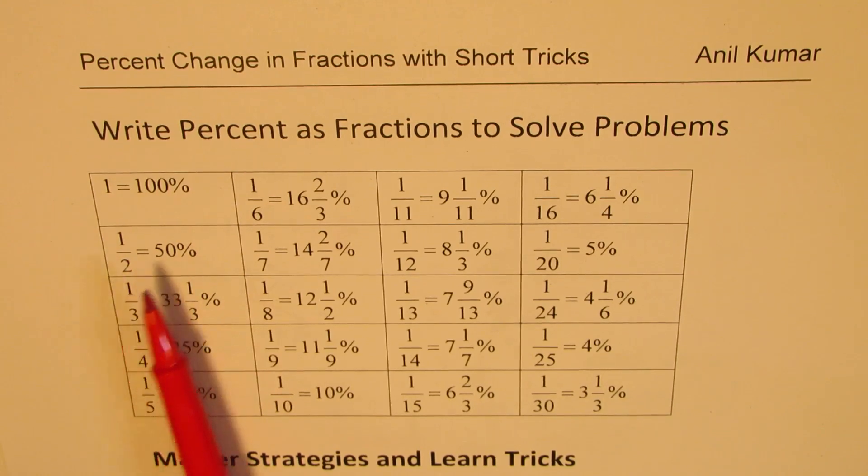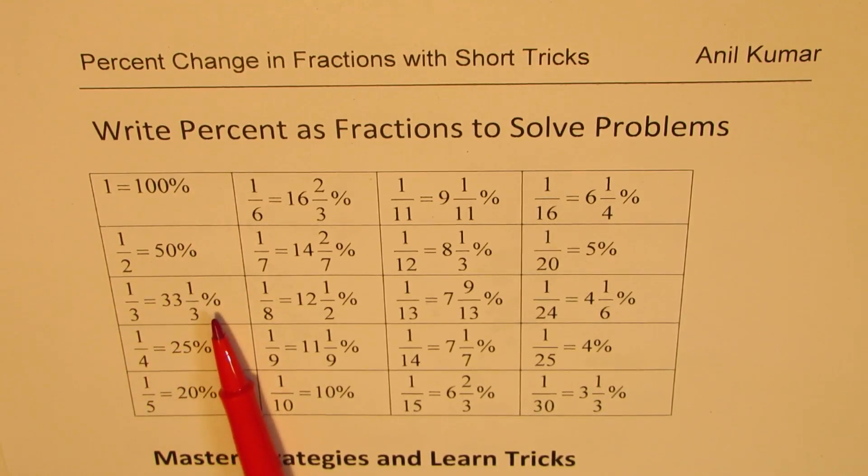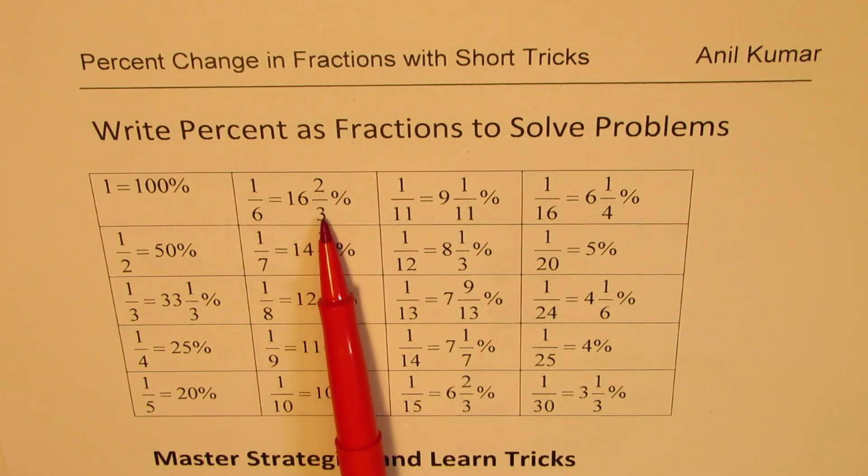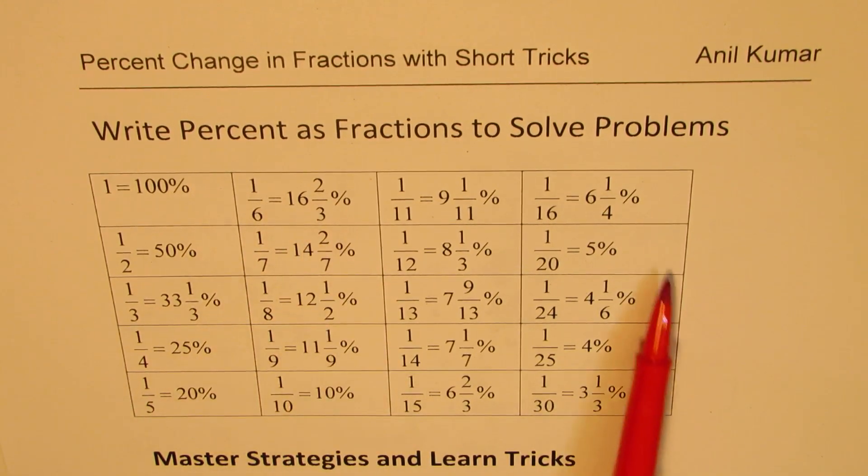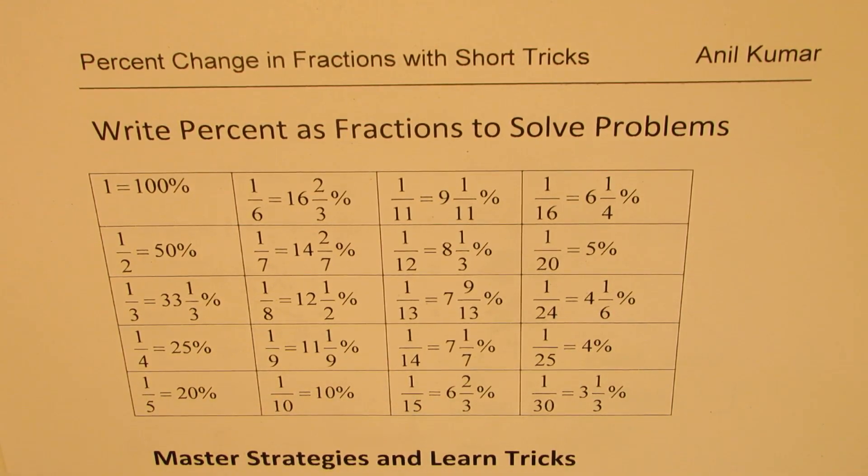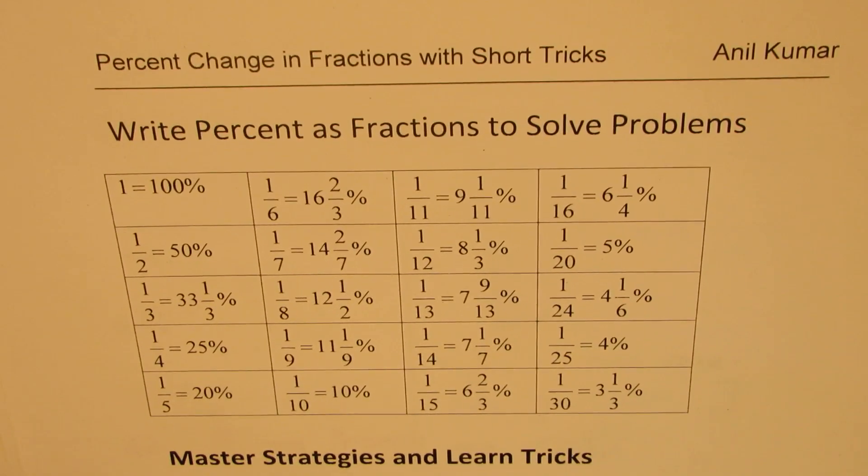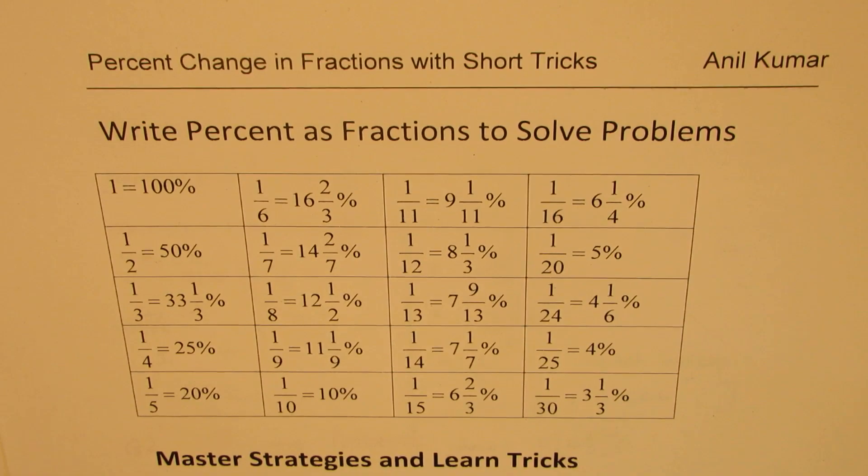1 is 100%, half is 50%, 1 over 3 is 33 1/3%. And we just now saw 12 and a half percent is 1 over 8. And what is 1 over 6? Well, 1 over 6 is 16 2/3%. So this table will help you to pick up examples and check for yourself how to work with percent and fractions. I hope that makes sense. Feel free to write your comment, share your views. If you like and subscribe to my videos, that would be great. And if you have any queries, you can always send it to my email, which is right there. I hope that helps. Thanks for watching and all the best.